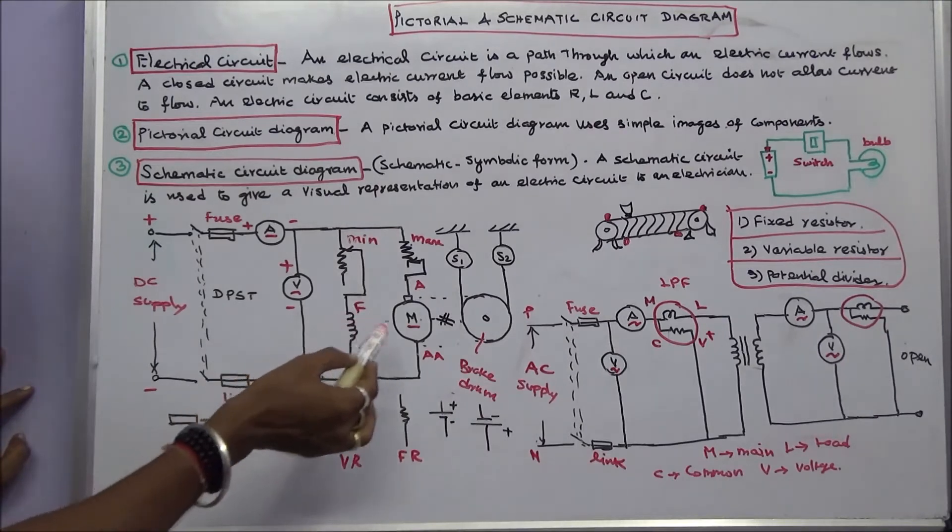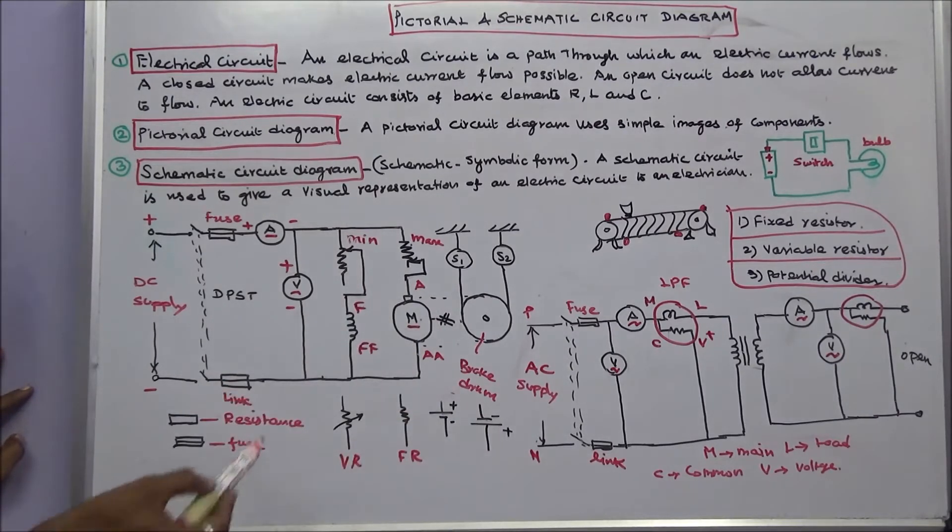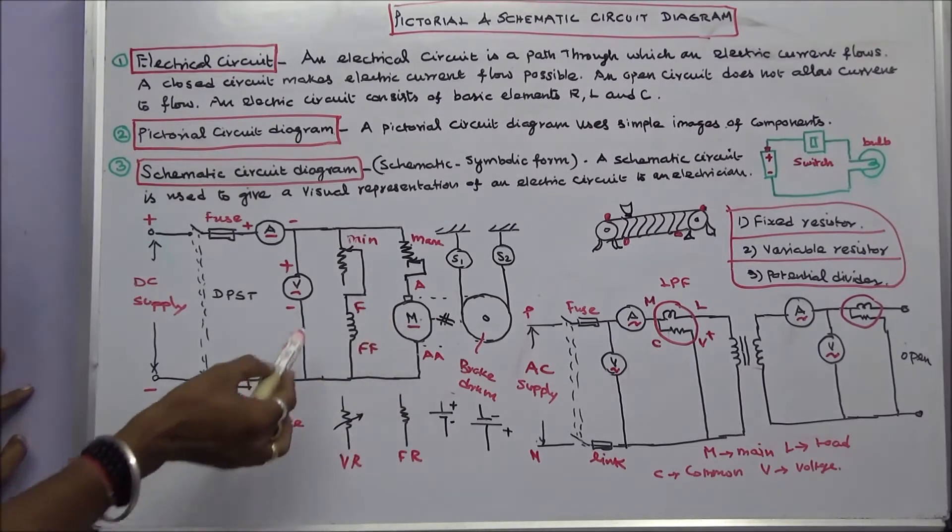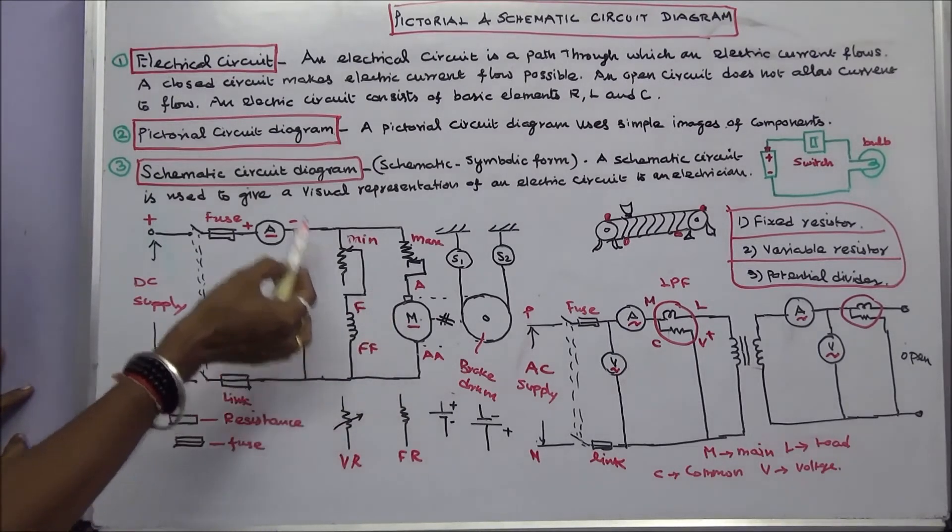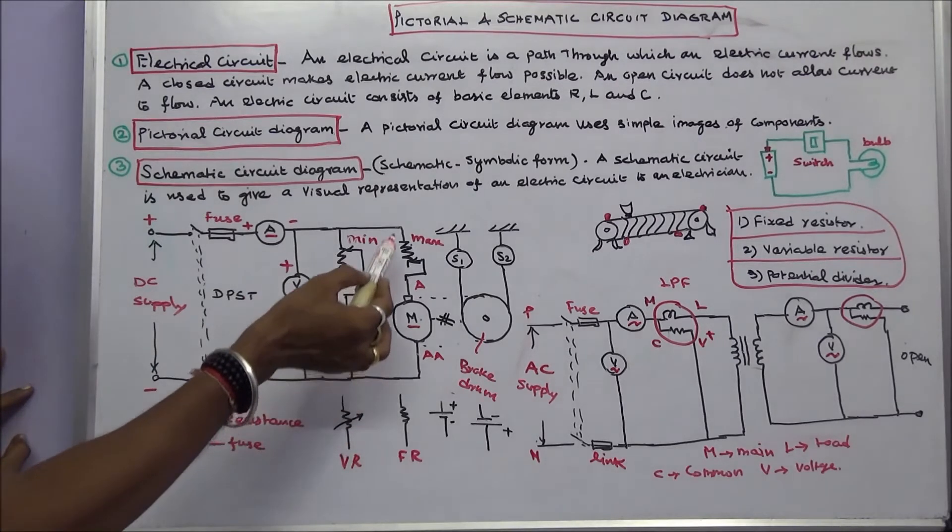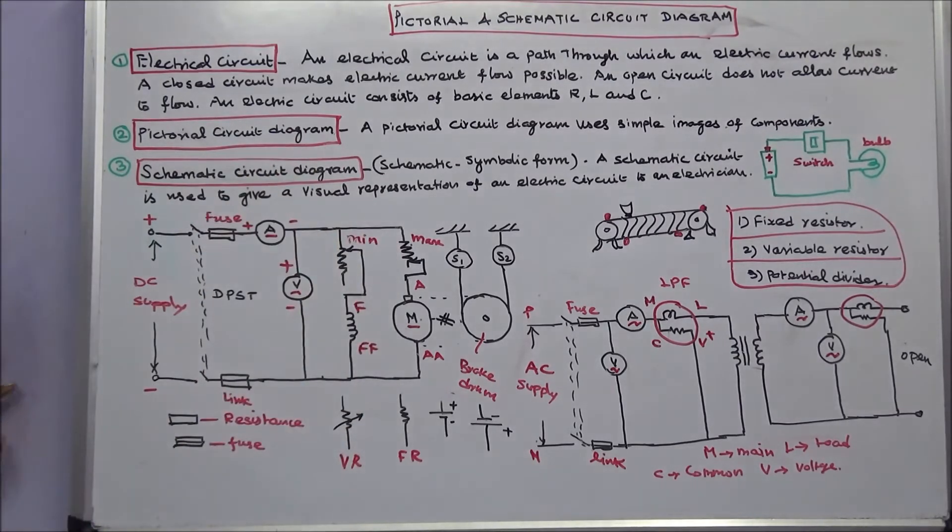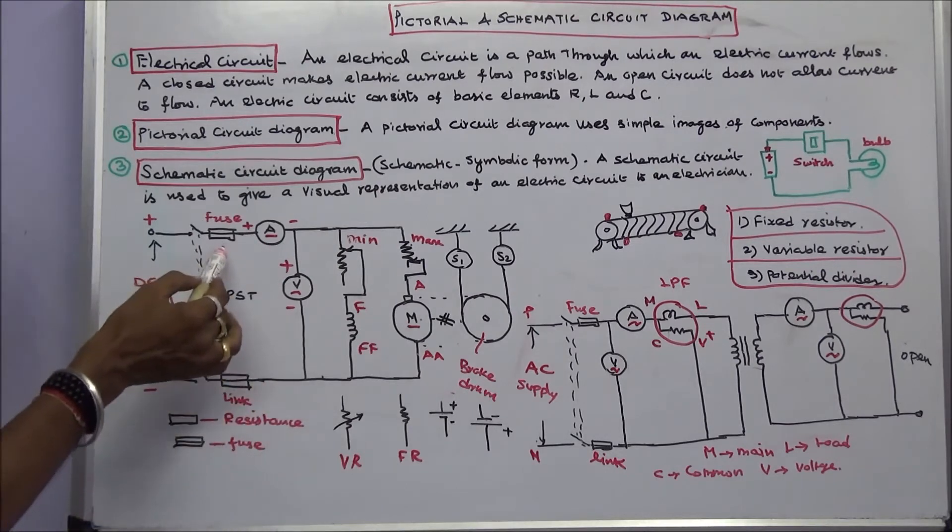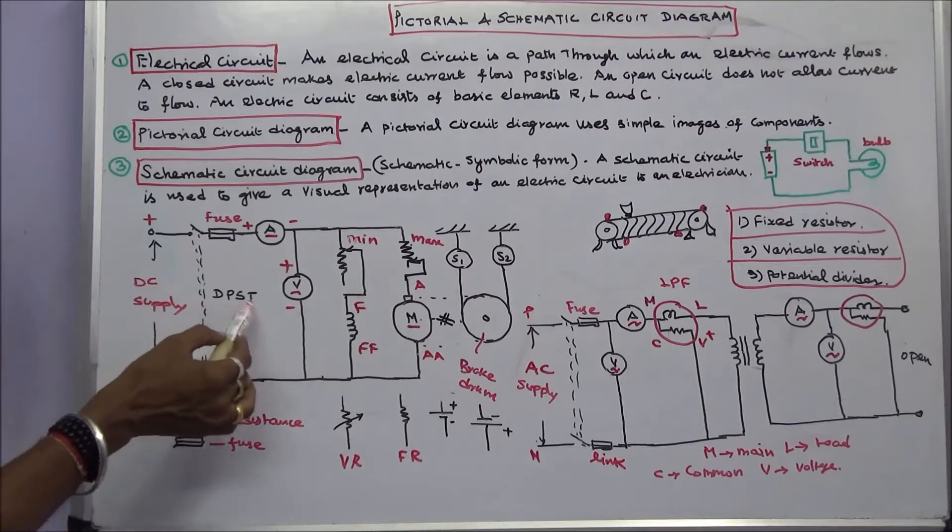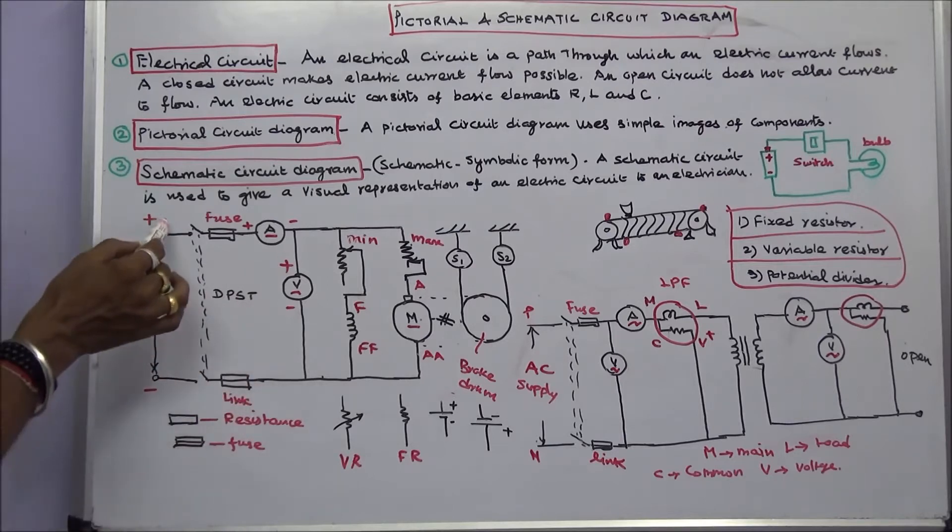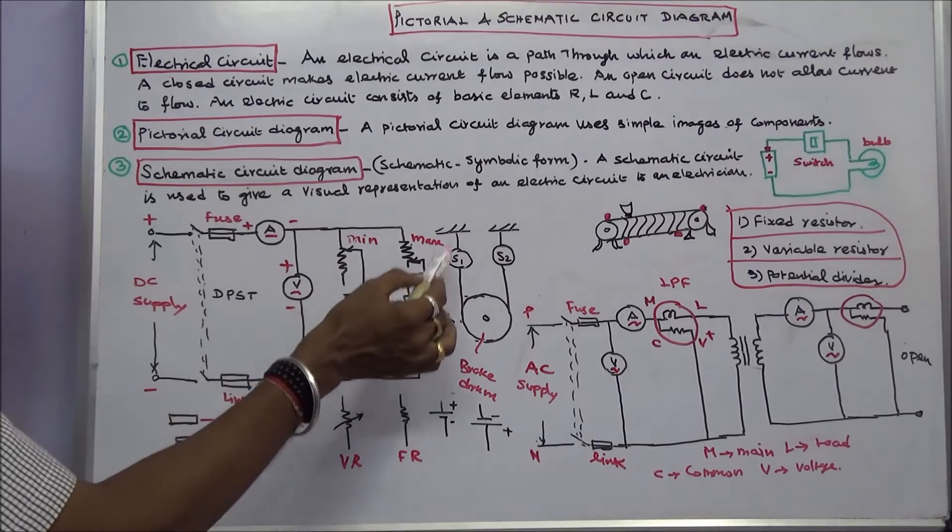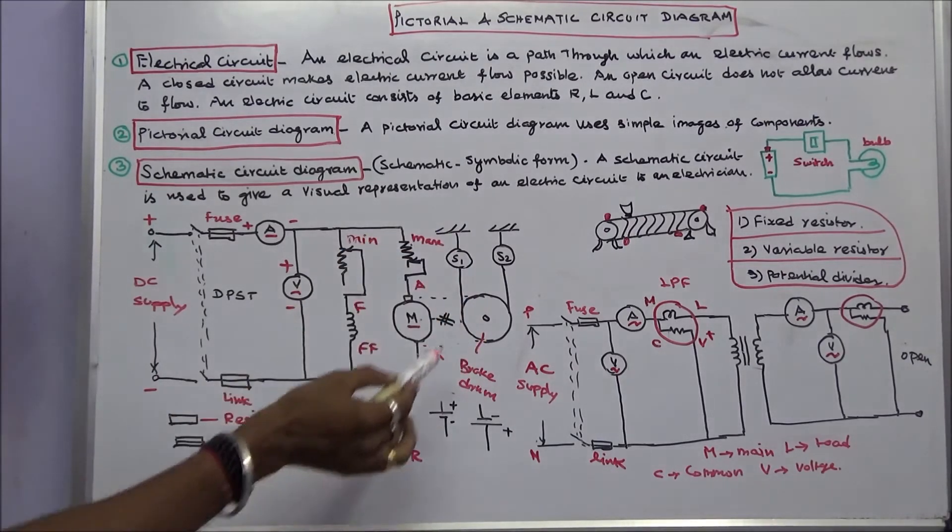This is a load test of a DC shunt motor. This is a field winding, this is an armature winding. Field winding rheostat is kept in minimum position. Armature winding resistor is kept in maximum position. This is a DC ammeter, DC voltmeter. These two are fuses, fuse and link. This is DPST double pole signal through. This plus minus indicate a DC supply. S1 spring balance, S2 spring balance. This is a brake drum.